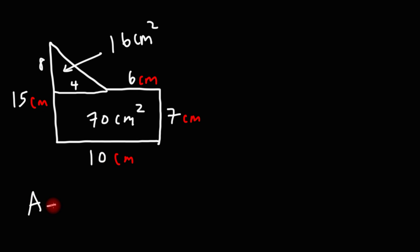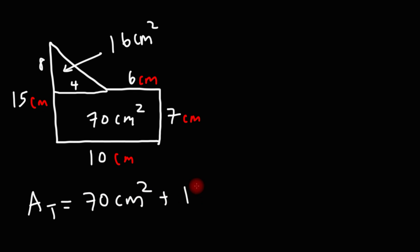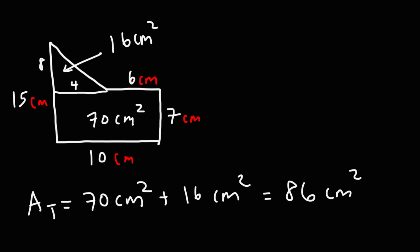Now we can calculate the total area by adding those two values. 70 plus 16 is 86 square centimeters. So that is the area of that particular composite figure.